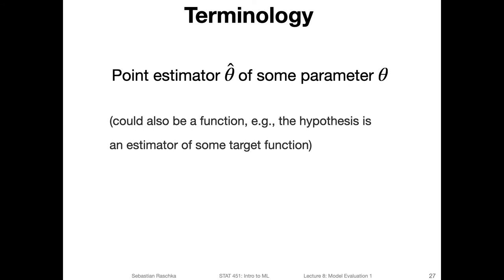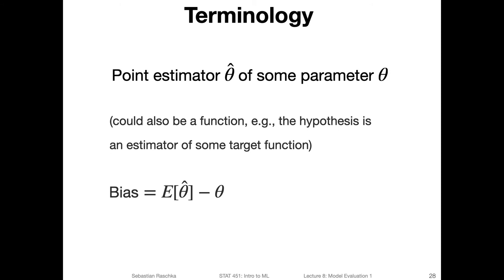So that was the intuition behind bias and variance. Now we will talk about some of the terminology we'll use when defining bias and variance more formally, and then do the bias-variance decomposition. We will use the term point estimator, or theta-hat, which is a function used to find an approximate value of a population parameter using data or training examples. This is some true parameter we want to estimate, and theta-hat is our approximation of it.